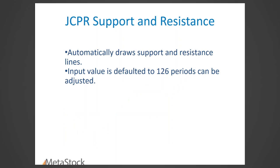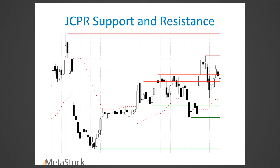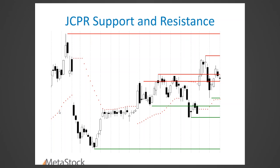JCPR draws automatic support and resistance lines adjusted to the last 126 days — the last half year, since there are 252 trading days on average in a year. You don't want to go too far back because candle patterns are very short-term. The filtering binary is not just stochastics — it's three indicators: the primary is the 9-day stochastic percent D, then a 14-day stochastic percent D for confirmation, and Wilder's directional movement plus/minus DI. These are each given points: 9-day gets 20 points, 14-day gets 10, directional movement gets 10. The filtering binary ranges between plus 40 and minus 40.